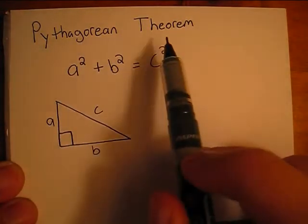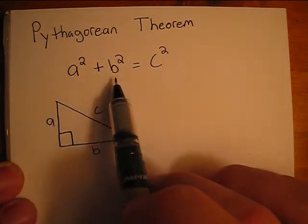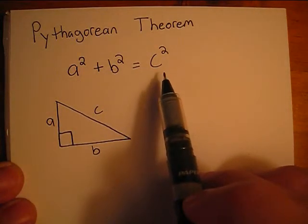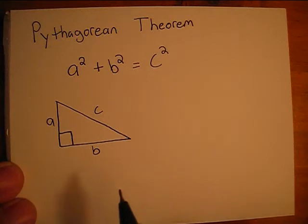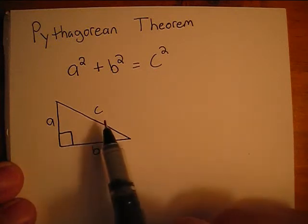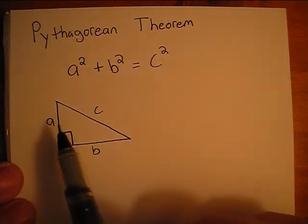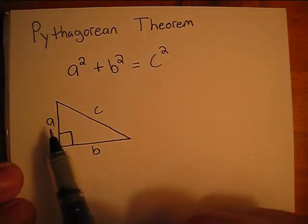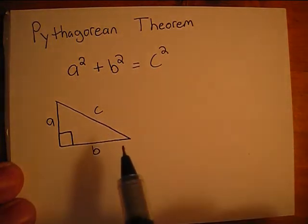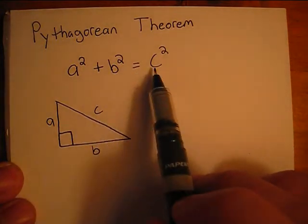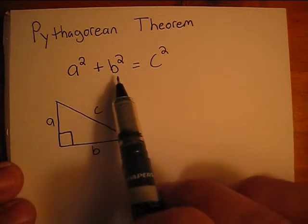Here we have the Pythagorean Theorem, stated as a squared plus b squared equals c squared, where a, b, and c are sides of a right triangle. c is labeled the hypotenuse. We can plug in different values like a and b to find c if c is unknown. We can also plug in values like b and c to find a, or a and c to find b.